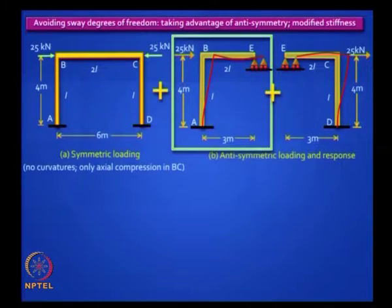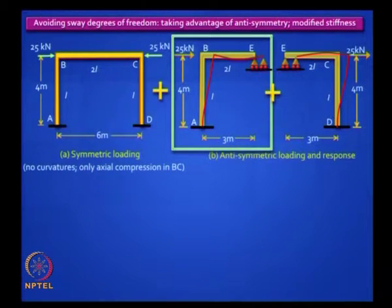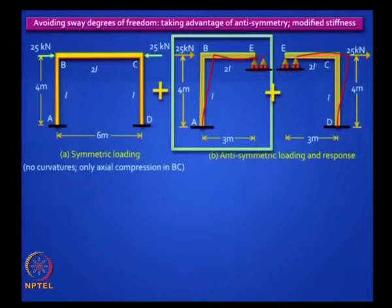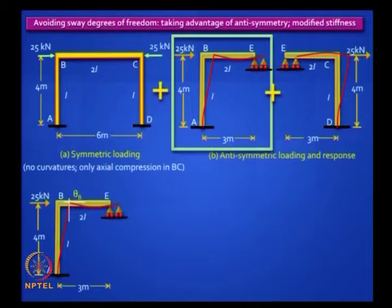If you look carefully at that frame, what is the degree of kinematic indeterminacy? Well, you have theta_B for sure, you have theta_E which you can ignore because you can modify the stiffness of B since the moment at E is 0, and you have a sway delta_BE which you can also ignore if you realize that AB essentially behaves like a cantilever. So let us look at it more carefully.